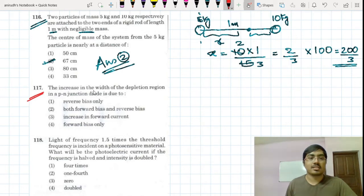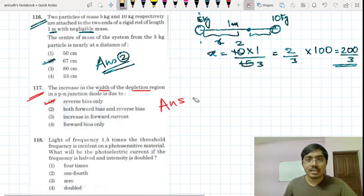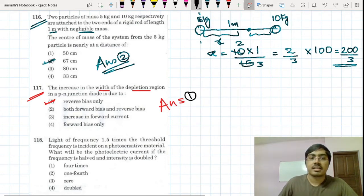And the next question is very simple, a concept based question from the topic of PN junction diodes. Width of depletion region is increased. How will that happen? It will increase only if it is connected in reverse bias. So it's a straightforward question, no need of much explanation from my side.